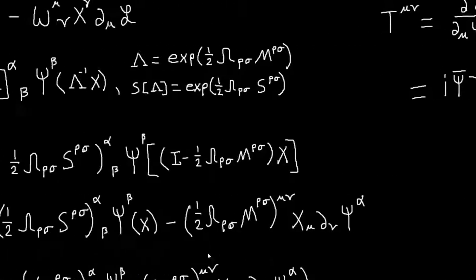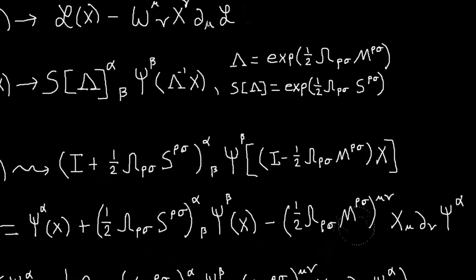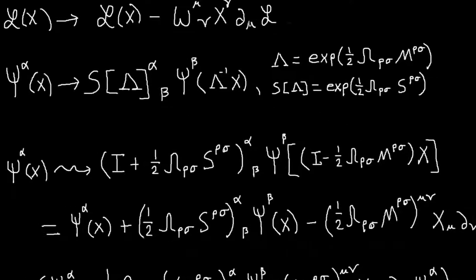And basically we get this, we get these three terms, and then of course there's a fourth term involving this. It will involve a pair of omegas which are infinitesimal, so that term will go away, so I end up with these three terms.